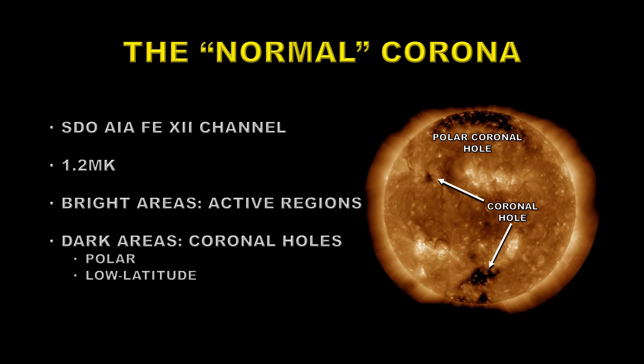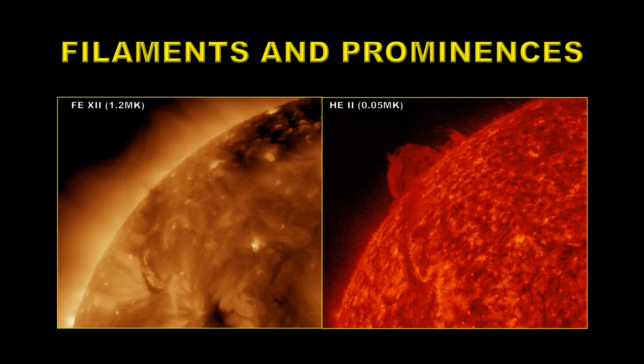You can just see a sliver of the south polar coronal hole at the bottom of the image. There are also lower latitude coronal holes shown here, which sometimes can be so large they actually cross the equator, and these are the ones that can produce high speed solar wind that creates geomagnetic storms.